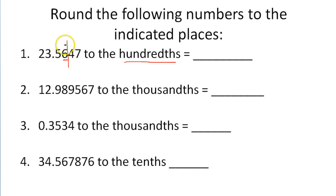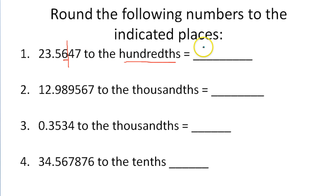And if this number here is 5 or higher, we will raise this to a 7. If it's 4 or lower, we will leave this a 6. So when I ask you to round to the hundredths place, the answer to this would be 23.56.